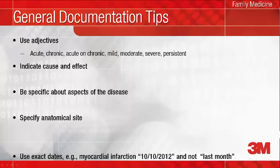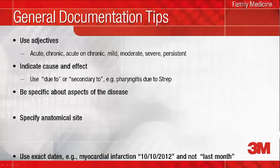Differentiate in your notes whether or not a condition is acute, chronic, or acute on chronic whenever appropriate. For example, document acute on chronic congestive heart failure instead of congestive heart failure. Use due to or secondary to to indicate cause and effect and to record all conditions the patient may have.